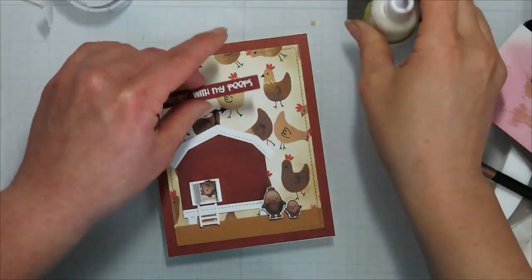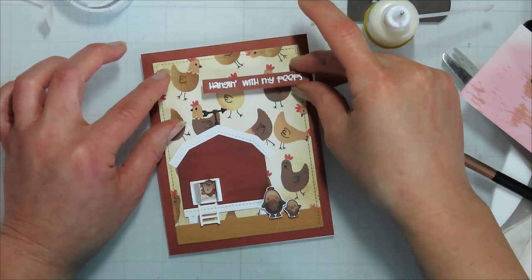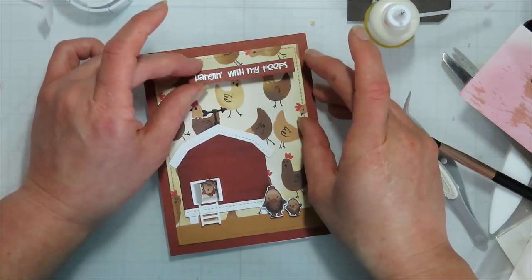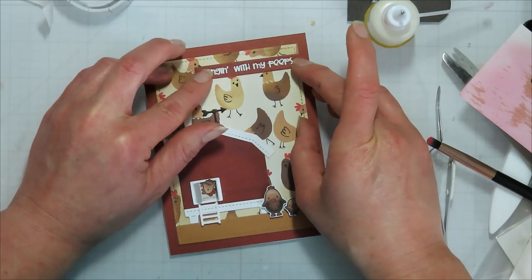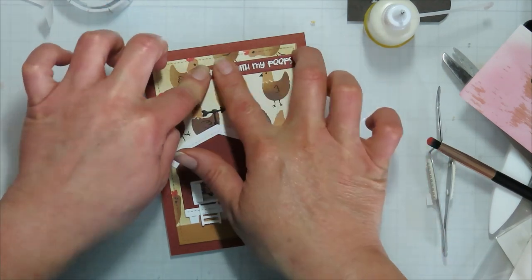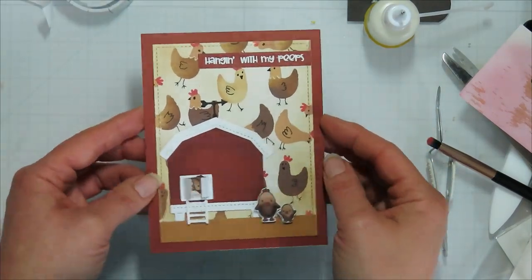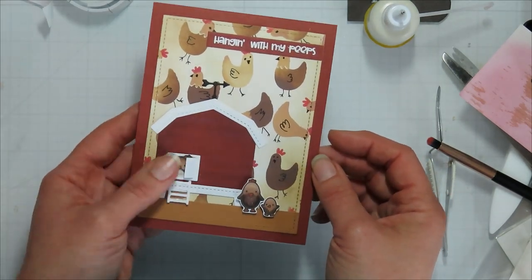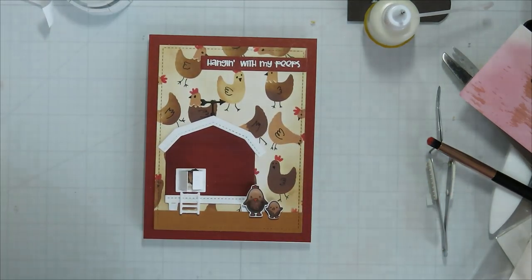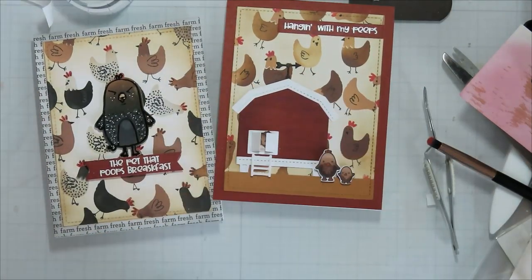And then for this one, for the sentiment, I also did some heat embossing on my barn red cardstock from Close to My Heart. And I just did the hanging with my peeps. And I set that off to the opposite side of my coop. I think it gives it a little bit more balance there. And then I have the little chicken hanging out from the chicken coop door and the two that are on front joining the rest of the flock in the background.